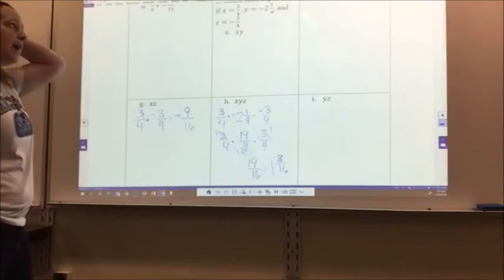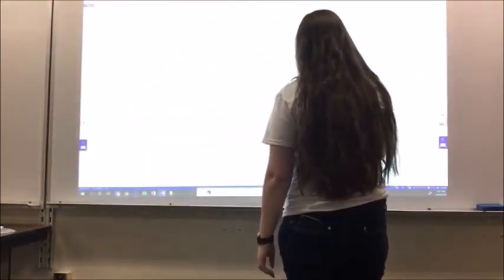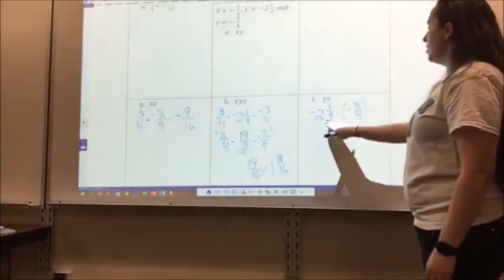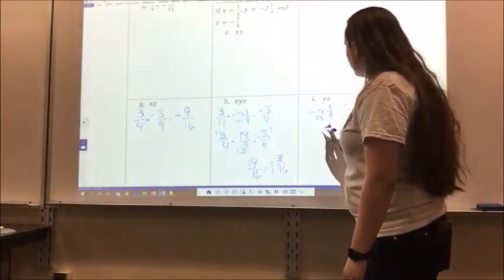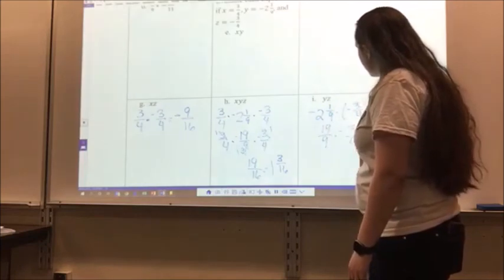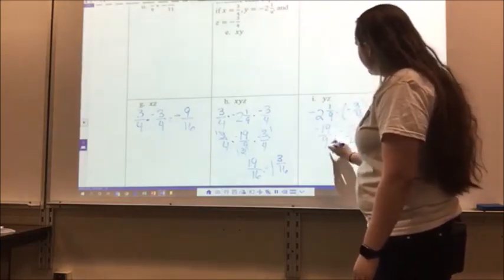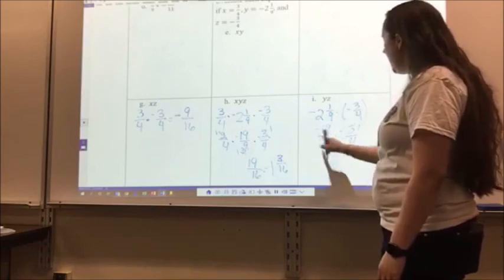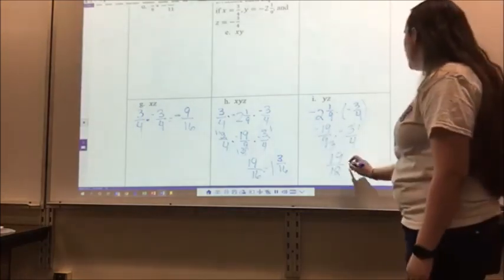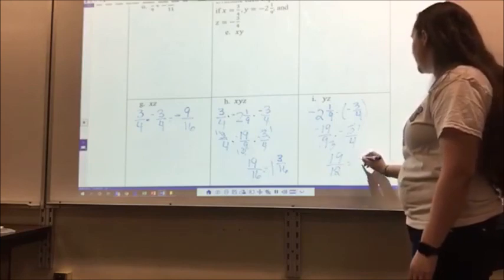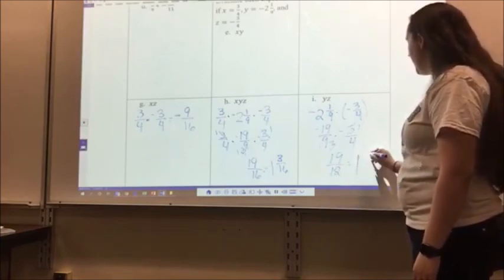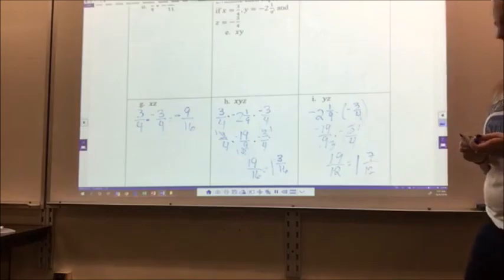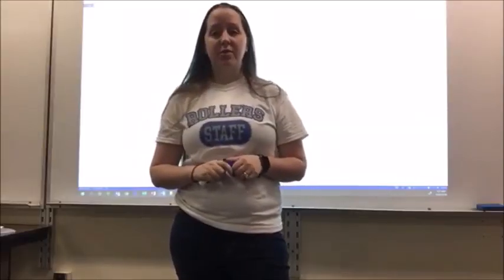For letter I, yz is negative 2 and 1/9 times negative 3/4. 2 and 1/9 changes to 19/9, times negative 3/4. Simplifying: 19 times 1 gives me 19, and 3 times 4 gives me 12. I have 2 negatives, so my answer is positive. Changing to a mixed number: 12 goes into 19 one time with 7 left over, so 1 and 7/12. That is the end of Chapter 3, Lesson 3.